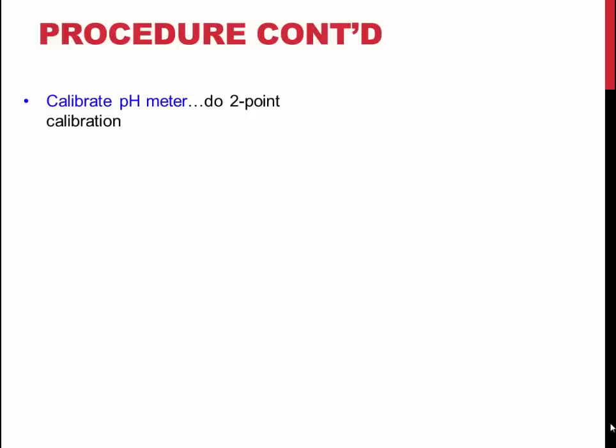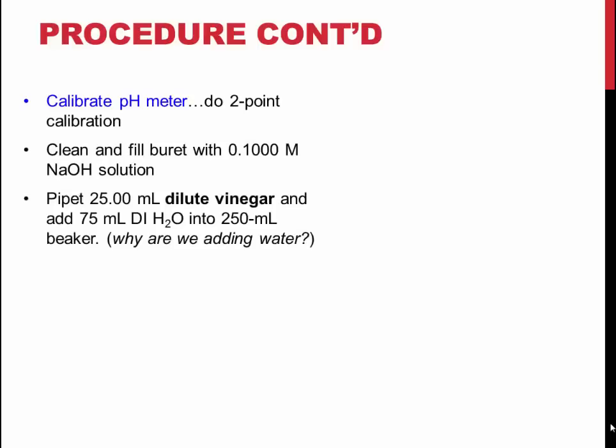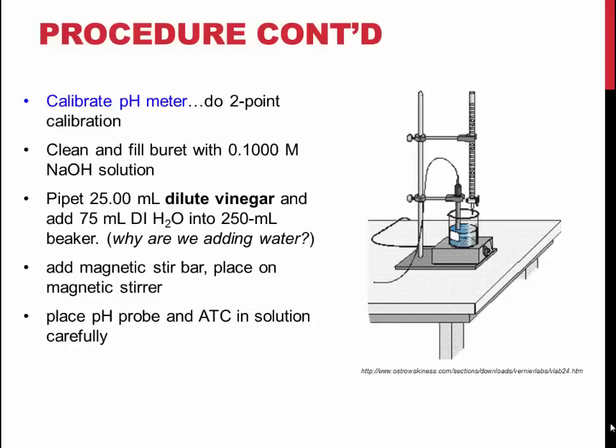To prepare it for analysis, rinse a burette and fill it with 0.1 molar sodium hydroxide. Pipette 25 mL of your diluted vinegar solution into a 250 mL beaker and add 75 mL of deionized water. Add a magnetic stir bar and place the solution on top of a magnetic stirrer. Be careful to keep the pH electrode away from the magnetic stir bar when you turn it on.